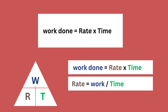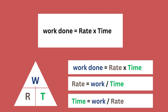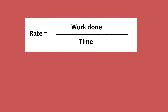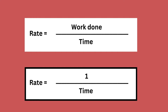Let us derive equations from the triangle. Rate is equals to work divided by time. To compute for time, we have work done divided by rate. For this topic, we will only be using one formula — the rate formula. That is work done divided by time, or work done over time.